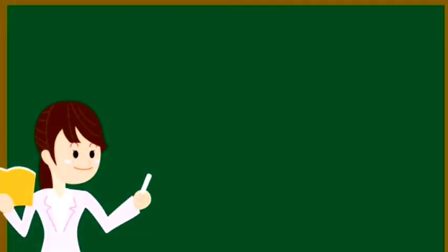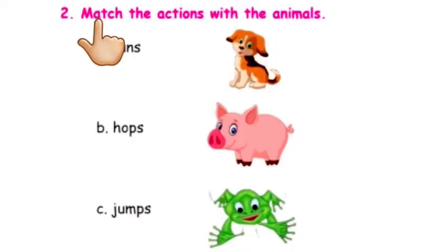Children. Next heading is? Match the actions with the animals. Here, three questions are given. We have to match with the correct answer. Okay children? Yeah. Question number one. Runs. Question number two. Hops. Question number three. Jumps.